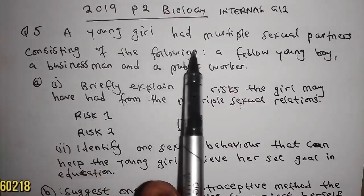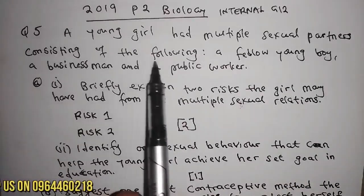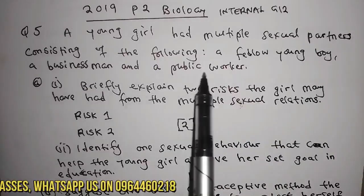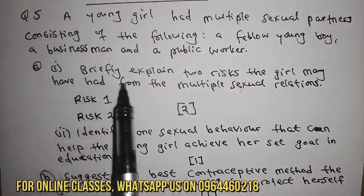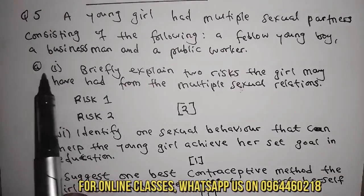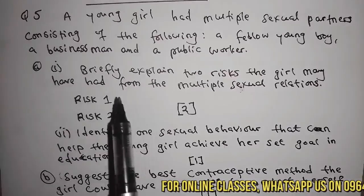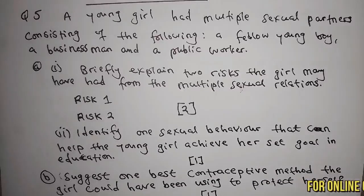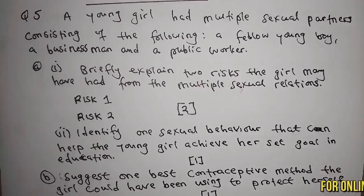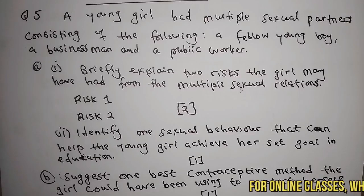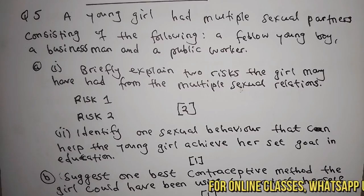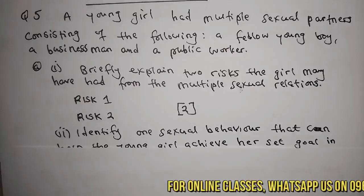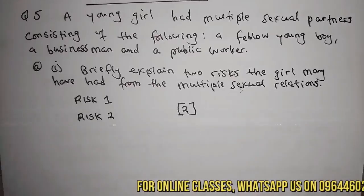The question says: a young girl had multiple sexual partners consisting of a fellow young boy, a businessman, and a public worker. Sub-question A1 says: briefly explain two risks the girl may have had from having multiple sexual partners.